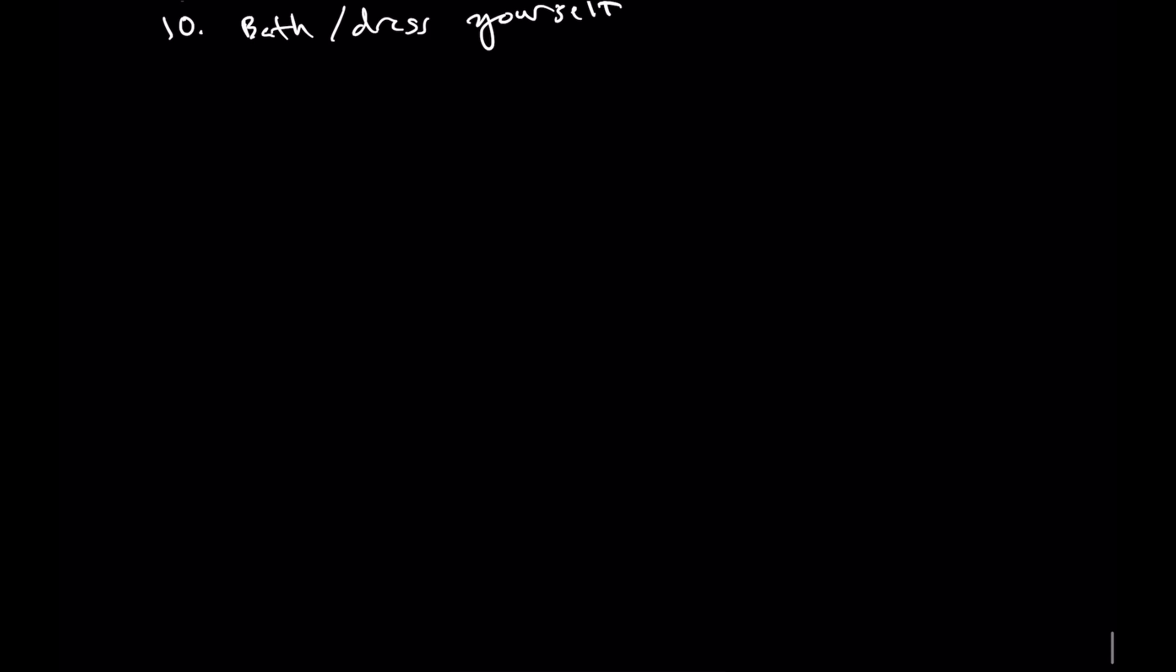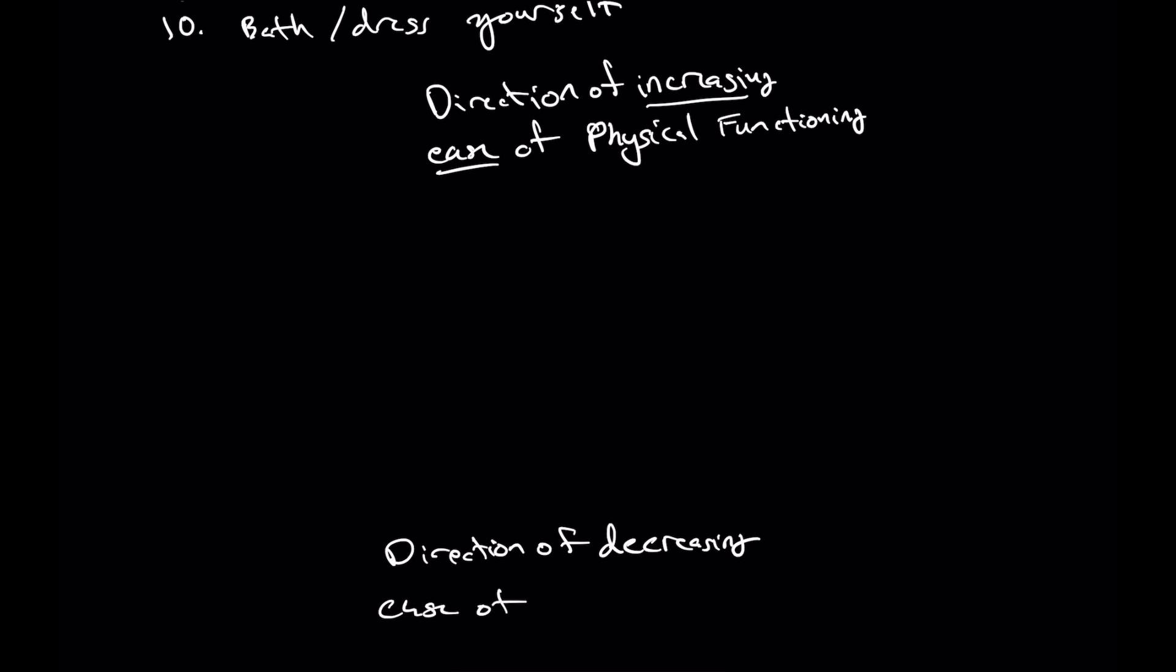The big first part of the construct is to say on this top end we have a direction of increasing ease of physical functioning. At this top end, the increasing ease is the focus, and down here at the bottom we have a direction of decreasing ease of physical functioning.